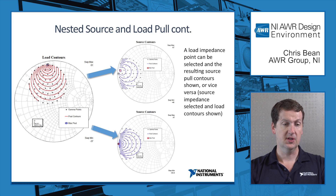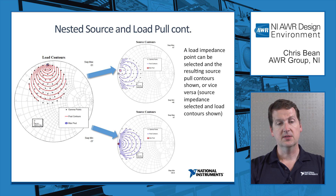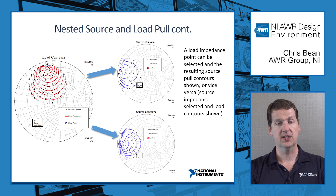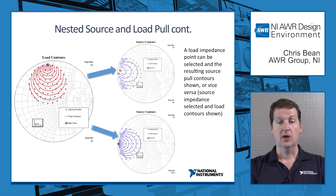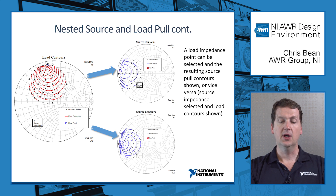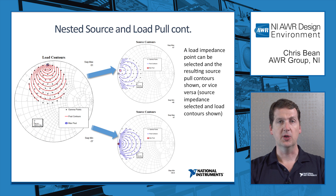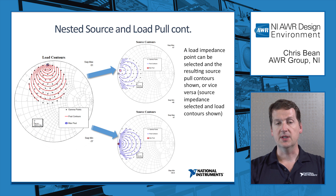Conversely, on the load side, if we change its impedance, we get the source contours with that load impedance. Just moving a marker, we can update our source pull. That allows you to not have to iterate between source and load pull — it's all there in one data set.